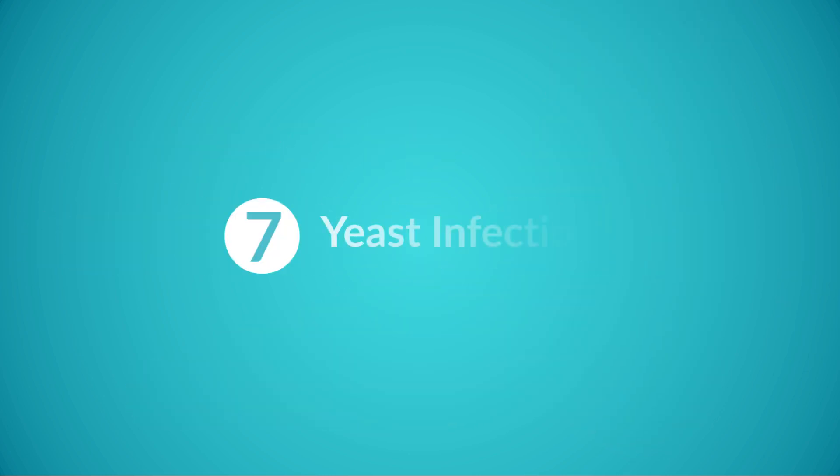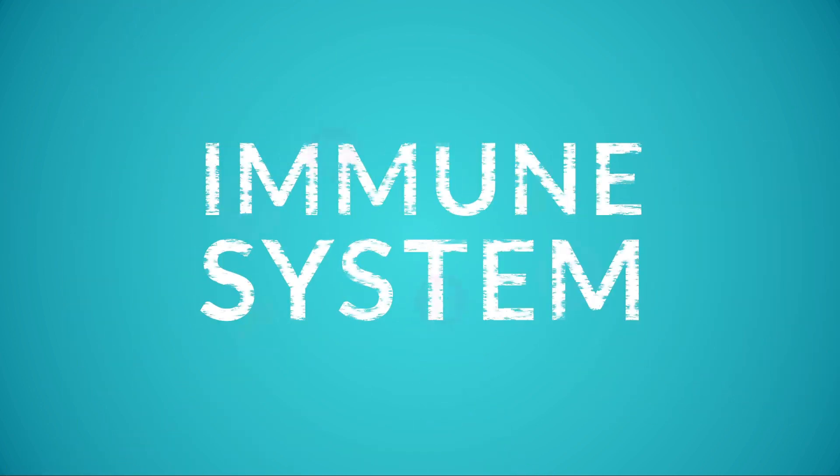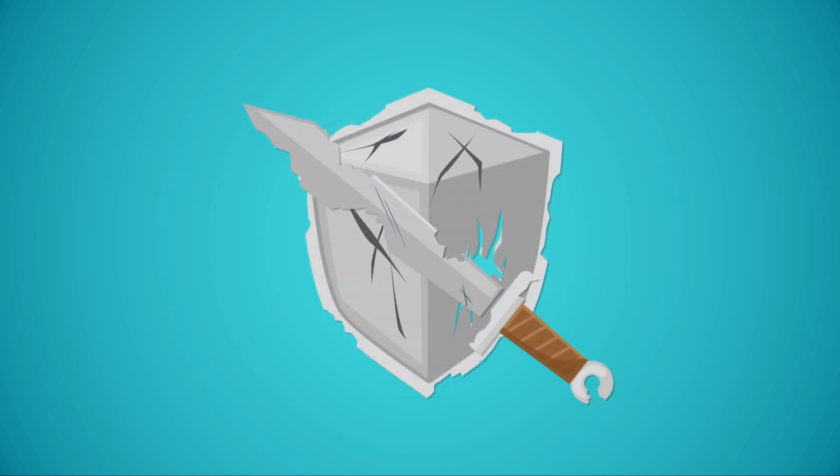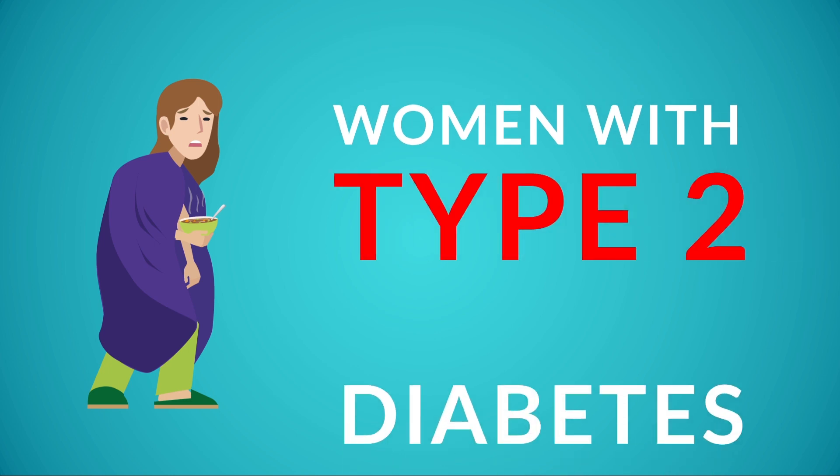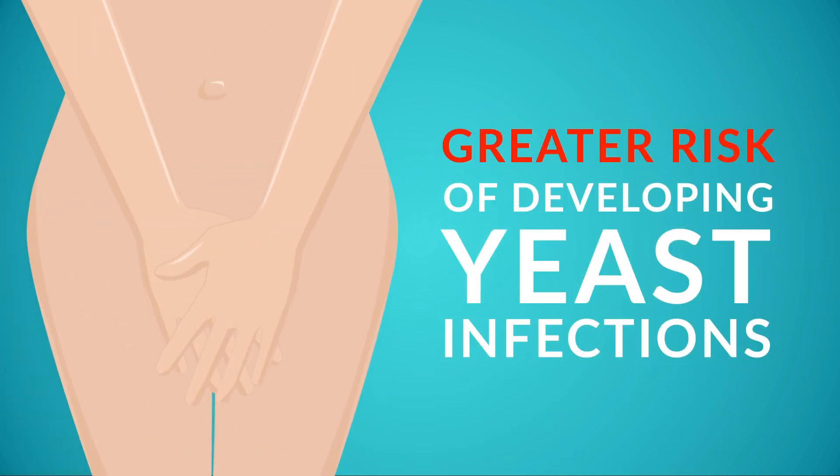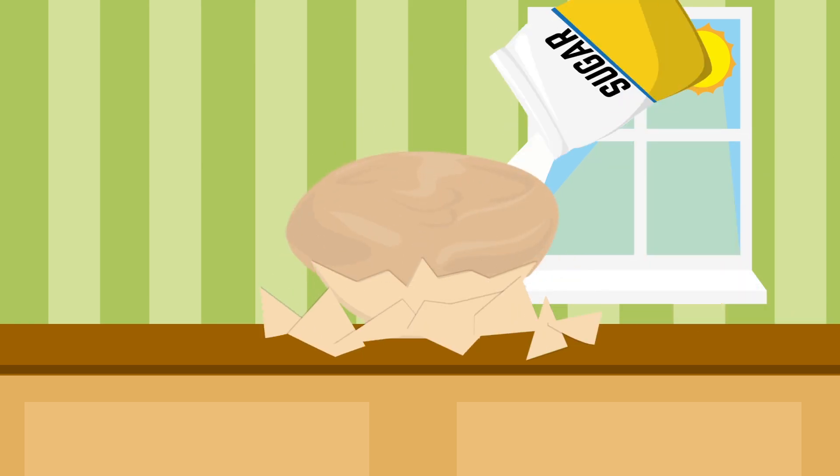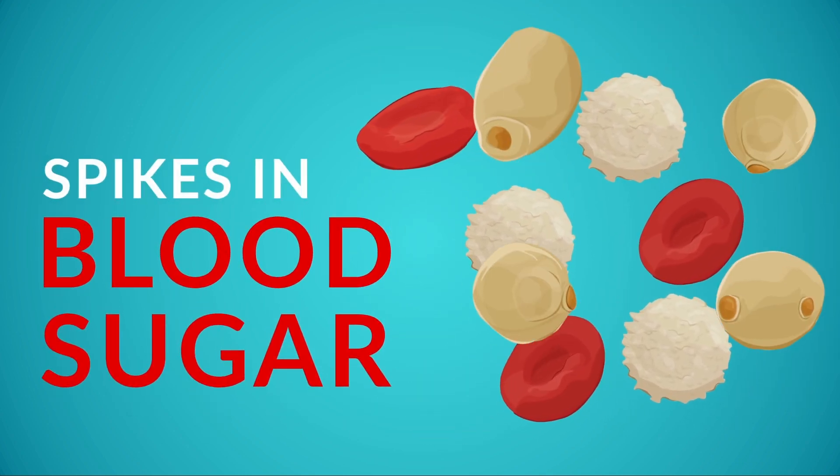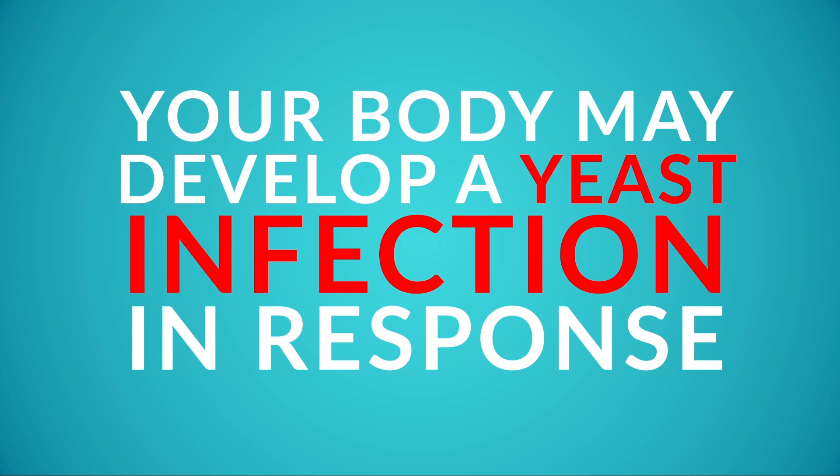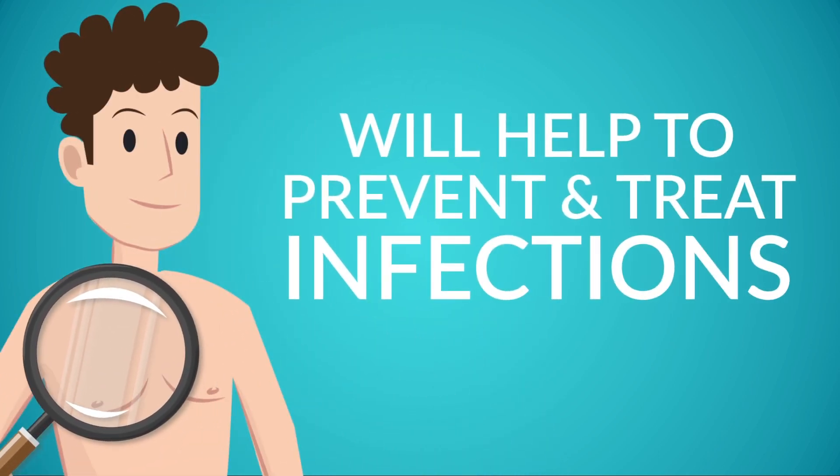7. Yeast Infections. When you have diabetes, your immune system can become weaker. This makes it harder for your body to fight off an infection, so you may experience frequent infections. Women with type 2 diabetes could be at a greater risk of developing yeast infections. Yeast feeds off sugar. Therefore, if diabetes is not properly managed, spikes in blood sugar can cause yeast to overgrow. Your body may develop a yeast infection in response. Effectively managing your blood sugar and paying attention to your skin will help to prevent and treat any infections.